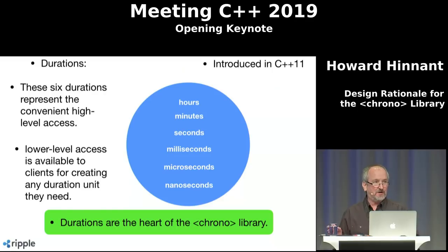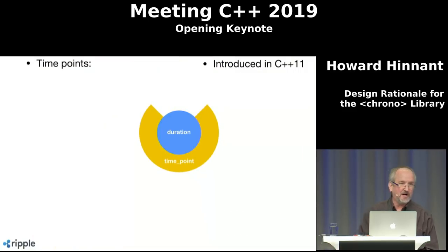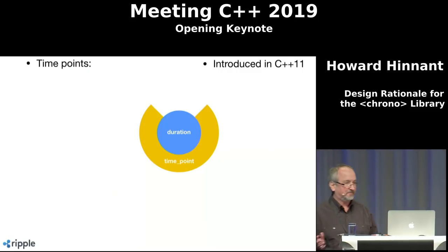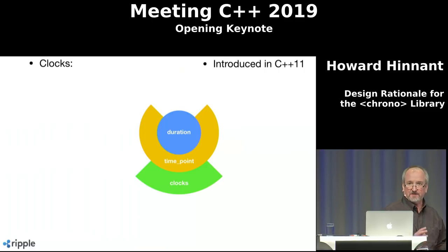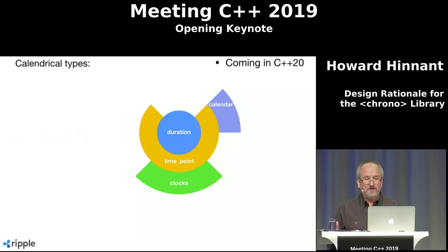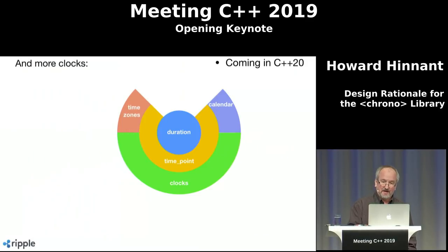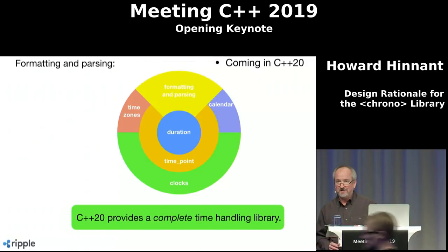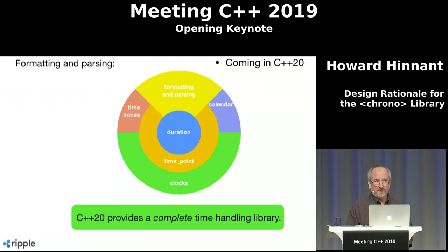Everything in Chrono stands upon durations. The first thing that stands upon durations is the time point. A time point is different from a duration — it's like today at three o'clock as opposed to three minutes. Also in C++11 we had clocks, which are a bundle of a time point, a duration, and a static function that gets the current time called 'now'. In C++20, we're adding calendrical types, time zone management, more clocks, and a ton of formatting and parsing capability. With C++20, Chrono really becomes a complete time handling library — you should never have to use the C timing API again.